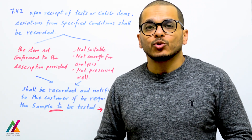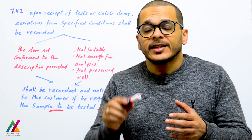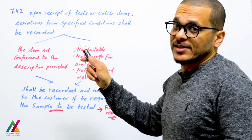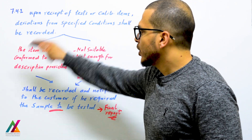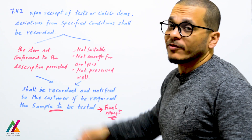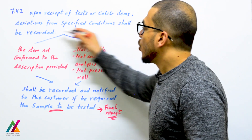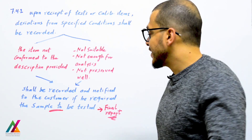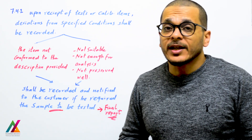Samples collected shall be checked at the lab to ensure their suitability for analysis. Upon receipt of test or calibration items, deviations from specified conditions shall be recorded — such as the item not conforming to its description, insufficient amount for analysis, or not properly preserved. All such deviations shall be recorded and the customer notified; if the customer insists on analysis, that shall also be mentioned in the final report.